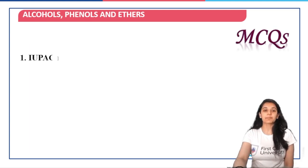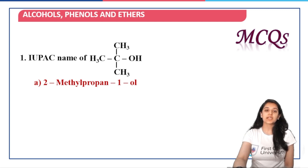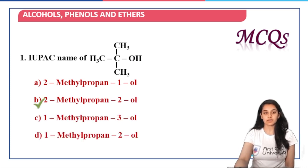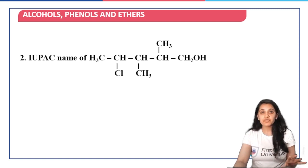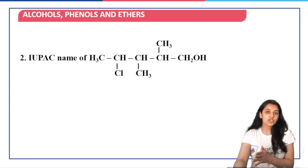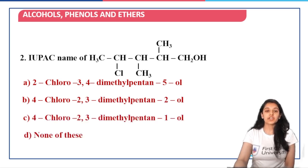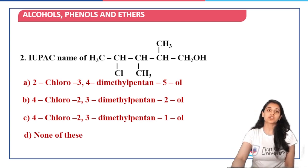Now let us see a few concept check questions. For the first IUPAC name question: we identify the parent chain as 3 carbon atoms — propane. Second position has methyl and OH, so it is 2-methylpropan-2-ol; option B is the right answer. Next question: parent chain has 5 carbon atoms, with a methyl substituent, a Cl, and another methyl. Naming from the OH side, it is 4-chloro-2,3-dimethylpentan-1-ol; option C is the right answer.